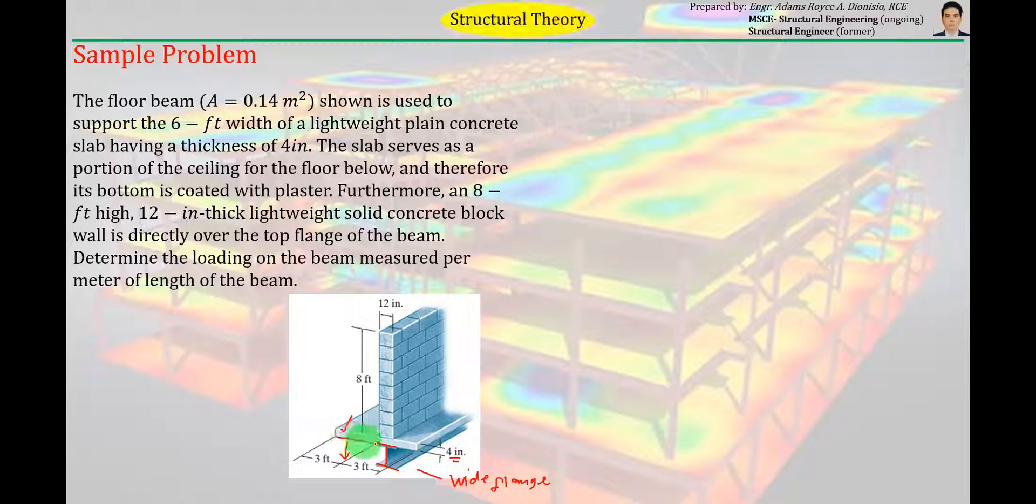Plaster is made up of, hindi siya concrete. Plaster usually it's a mixture of water, cement, tsaka sand. Okay, tama ba? So nilagyan ng coat dito, pinahiran yan, pinahiran yung ilalim, yung slab, para magkaroon ng plaster. So meron kang plaster dyan. Plaster. Okay, ito yung concrete slab. Concrete slab.